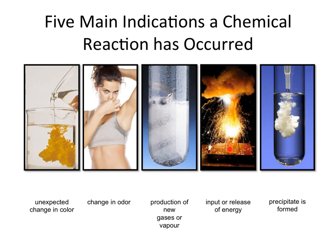The fourth indicator is input or release of energy. Usually the reactions we're going to be studying are exothermic, which means they're going to be releasing energy — this could be released as heat or as light. But reactions can also take in energy, where the resulting substance becomes very cold; that's endothermic. So as long as there's a change in energy, that's one of the indications that a chemical reaction has occurred.